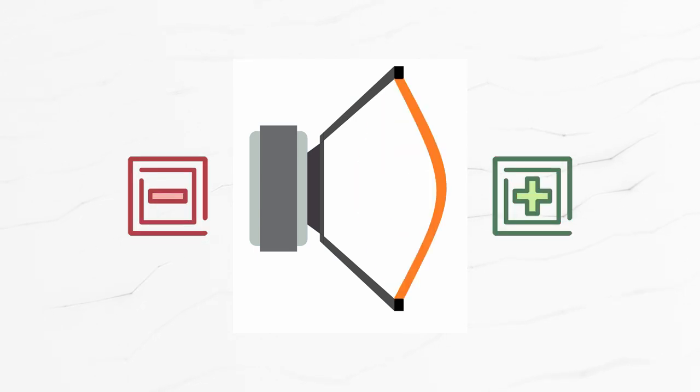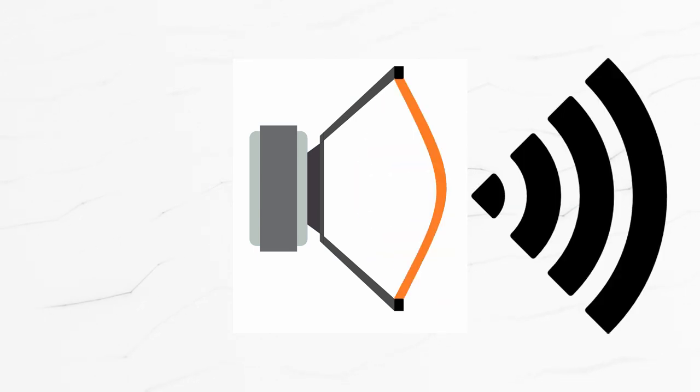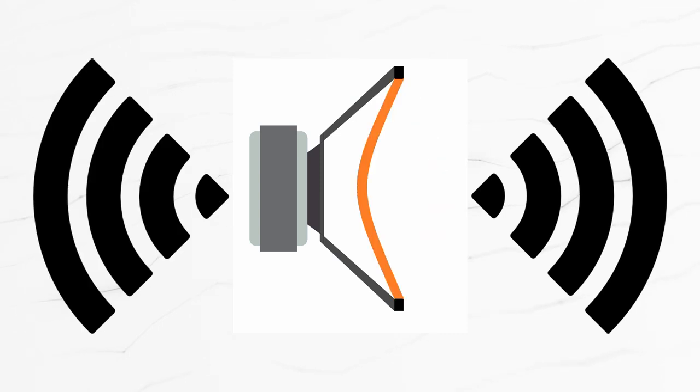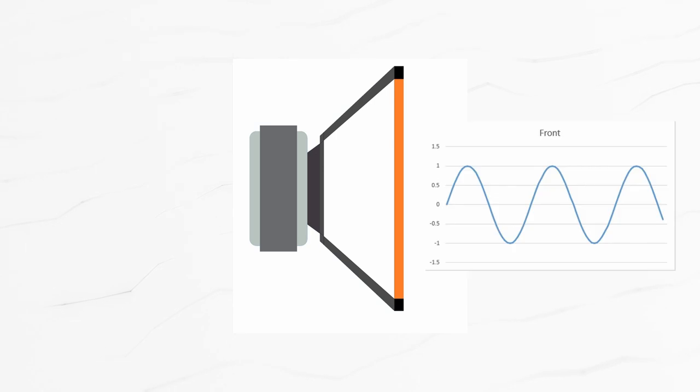The speaker produces sound in front of the cone and the same sound in the back of the cone. If you plot this down, the sound will look like a sine wave.